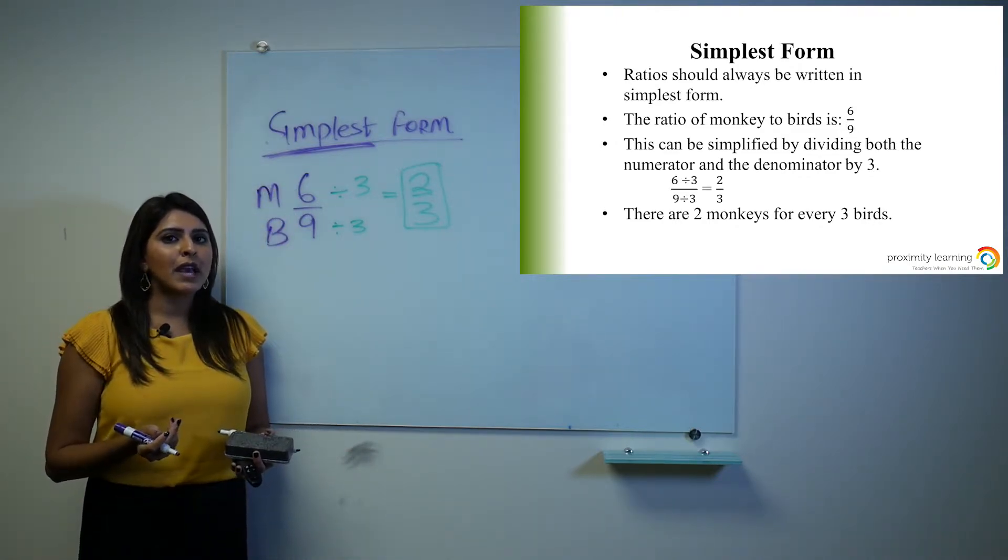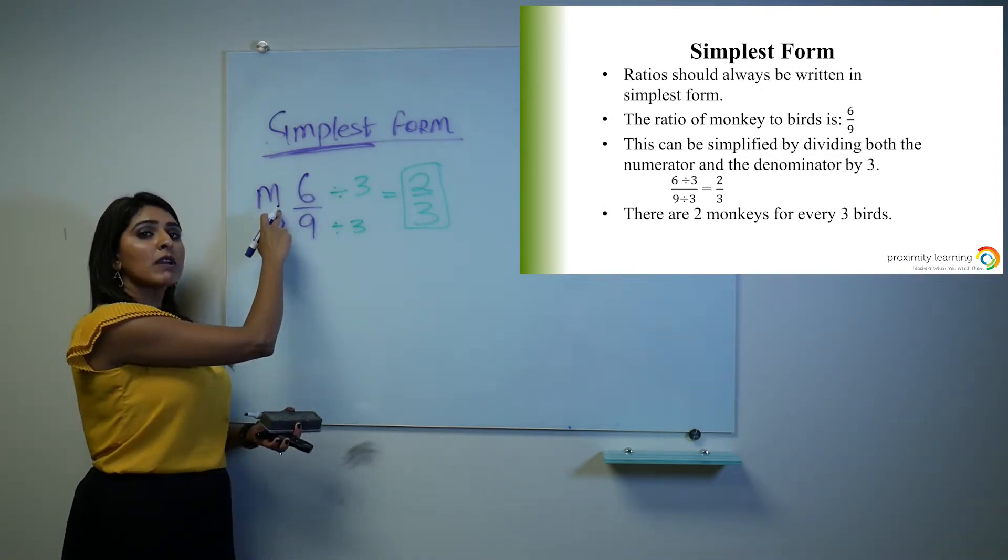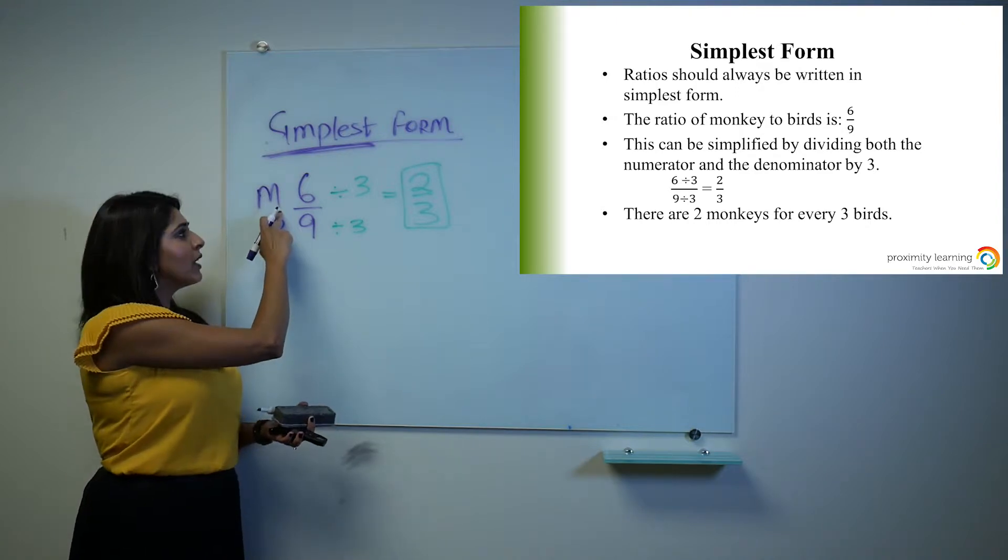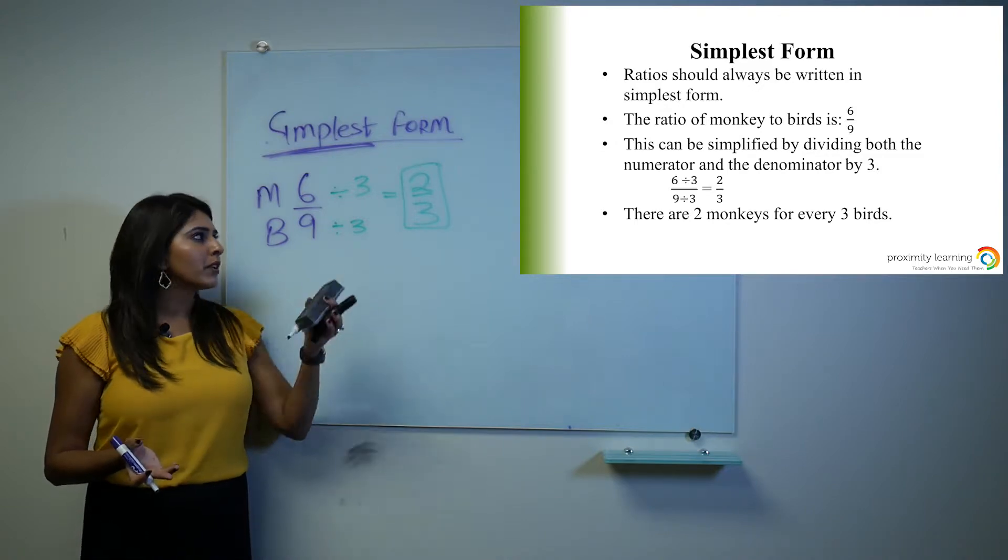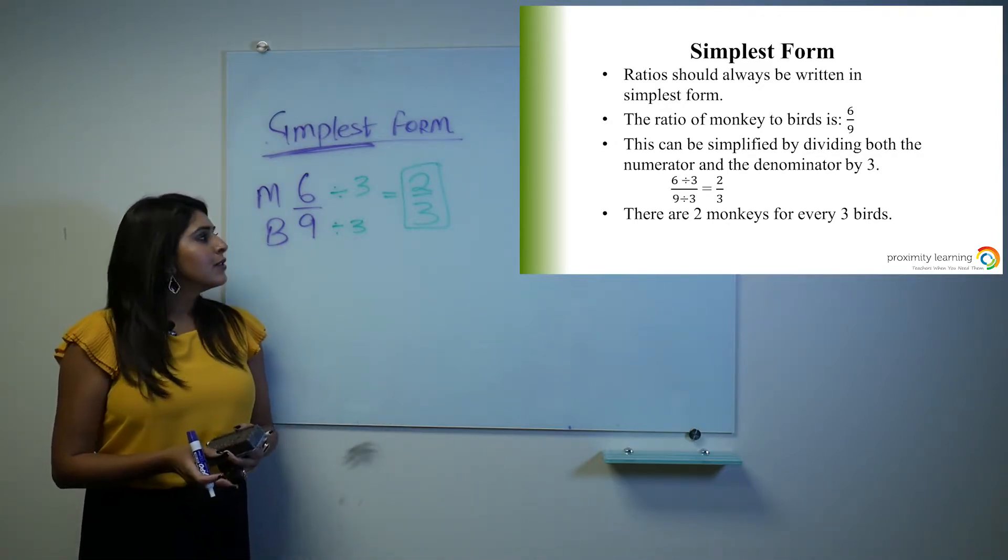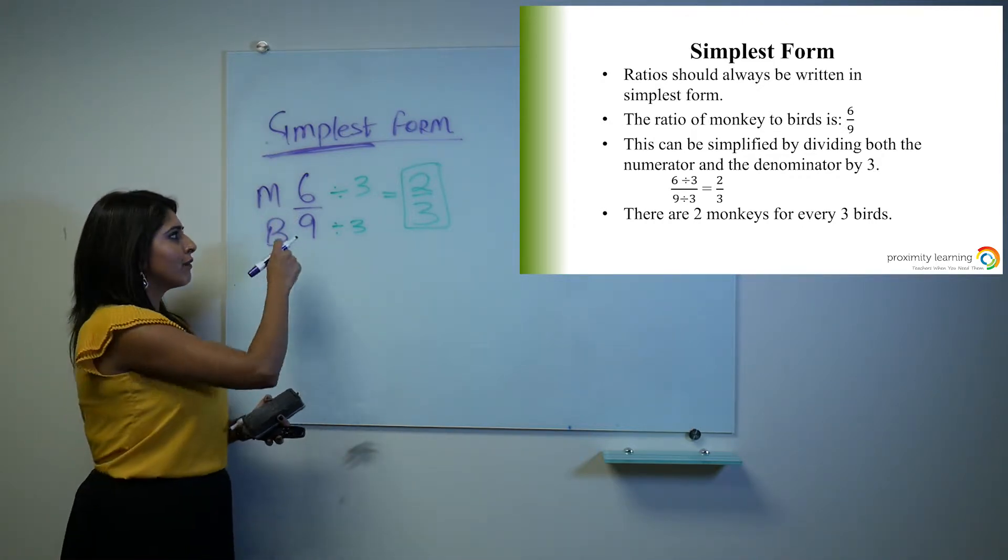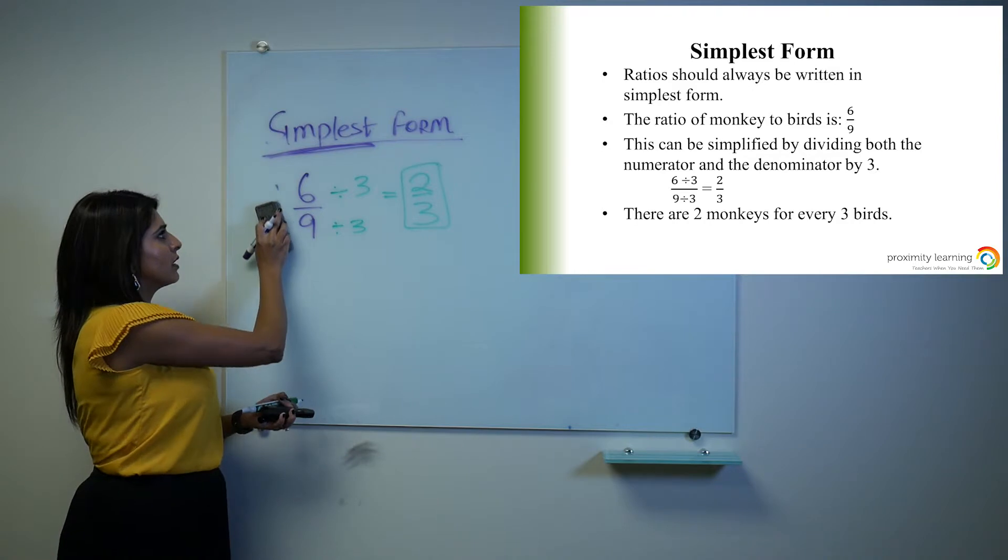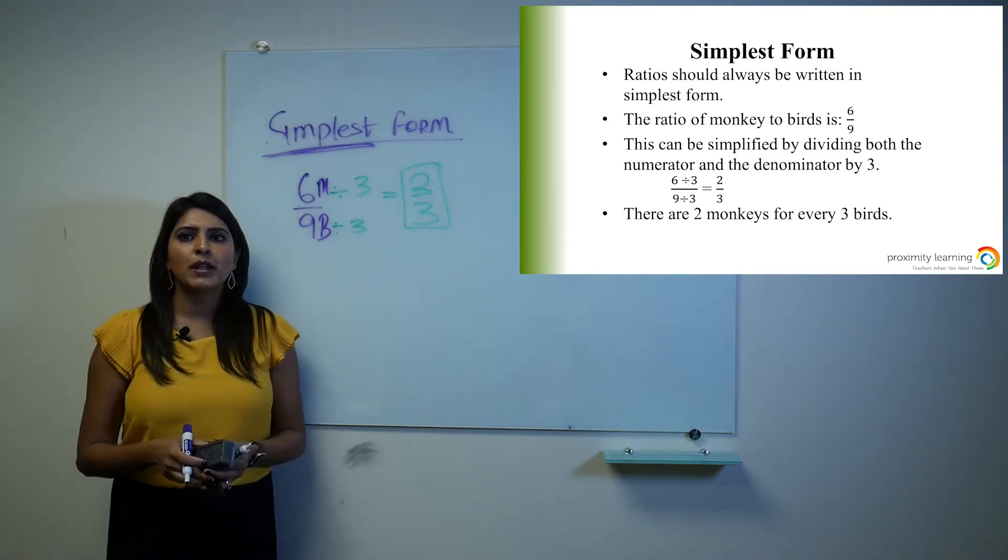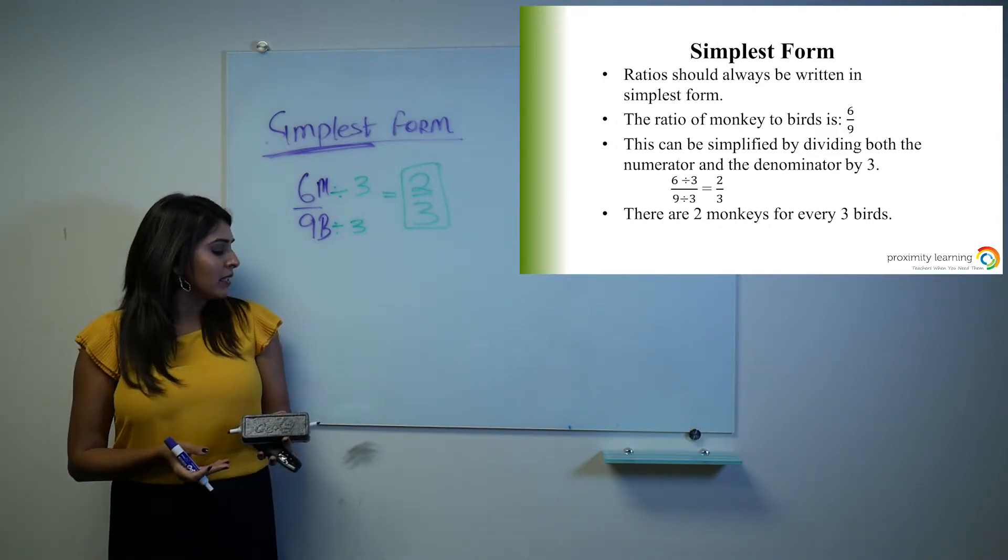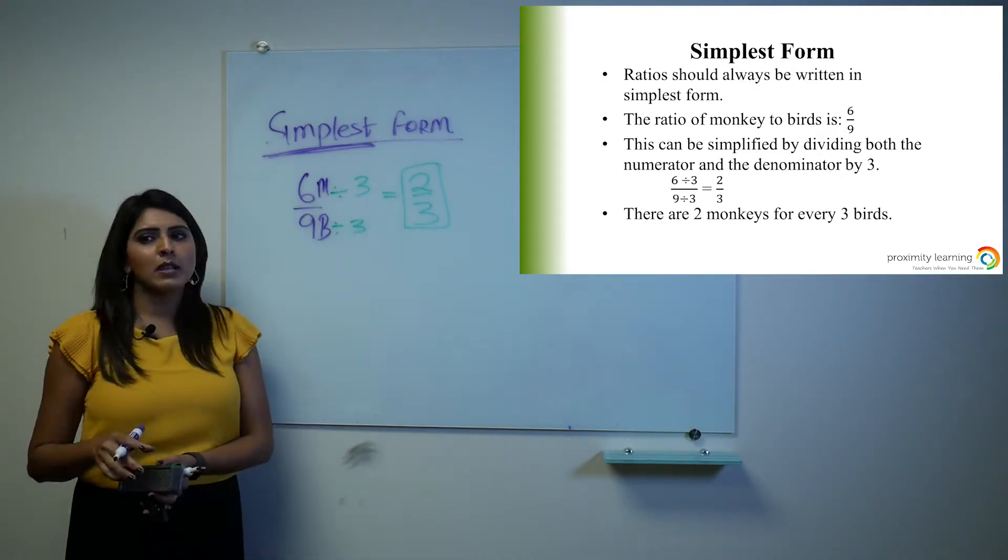Another thing I want to mention to you is that in ratios, you always want to make sure that next to your number, either before or after, you always write what it represents. What that does is it helps you avoid a lot of errors, getting confused with what number represents what term. So you can abbreviate it, you don't have to spell the whole thing out, but just get in the habit of labeling what represents what. That means that for every 2 monkeys, there are 3 birds.